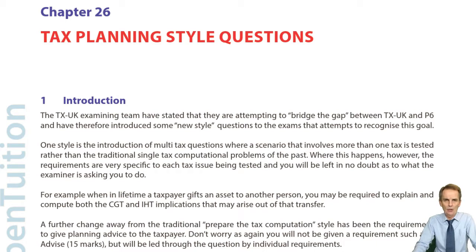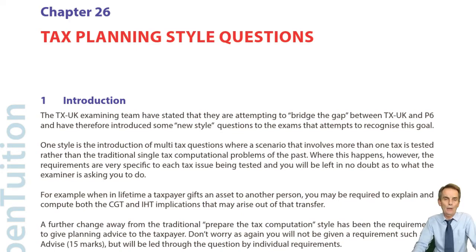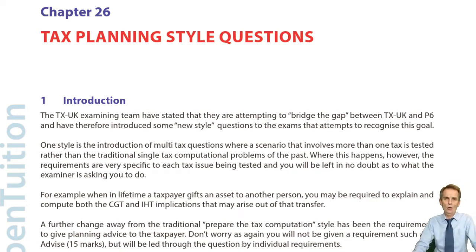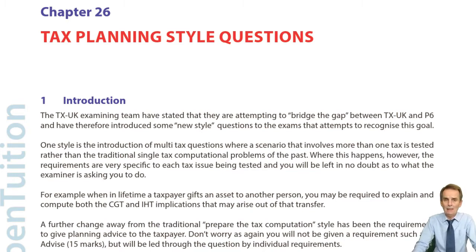Basic tax avoidance is permitted — arranging your taxation affairs so as to reduce your overall taxation liability. We saw that in the previous session when dealing with spouses or civil partners, specifically in relation to income producing assets. The heading we saw was joint income arising from a jointly owned asset, where the rules are that married couples or civil partners having joint ownership of an income producing asset apply the basic 50-50 rule.